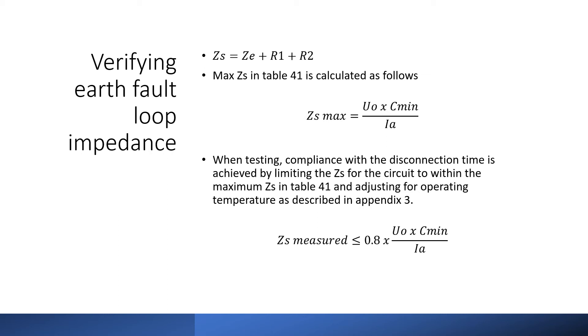These values are determined by the following formula. For protective devices that aren't included in Table 41 of BS7671 it is necessary to obtain the maximum permitted ZS from the manufacturer. It is also important to bear in mind that the values obtained in Table 41 need to be adjusted to allow for the difference in temperature when the test is carried out and the operating temperature of the cable when the circuit is under load. This is described in Appendix 3 of BS7671 which gives the formula at the bottom of the screen.